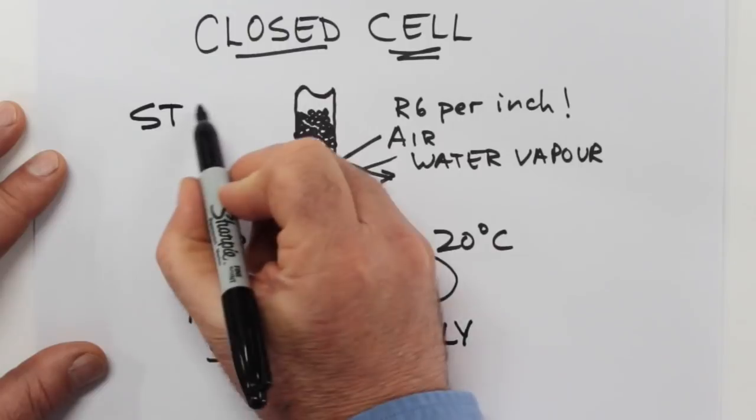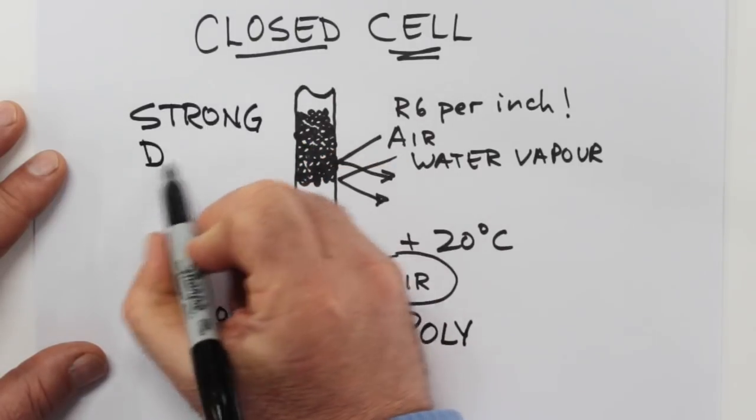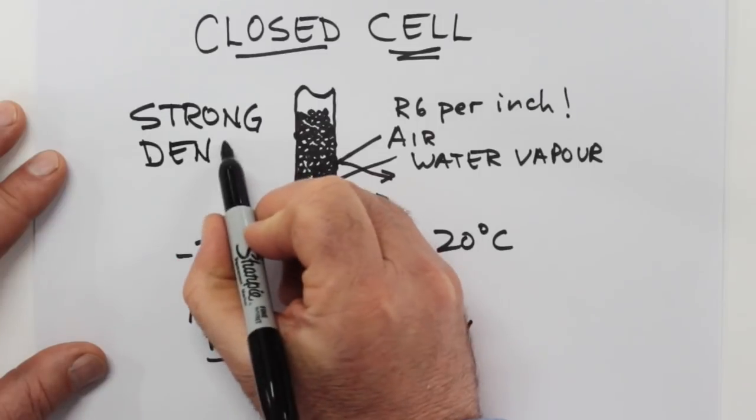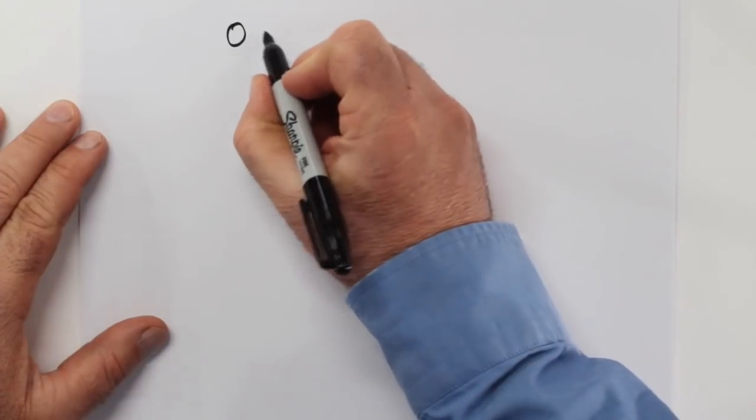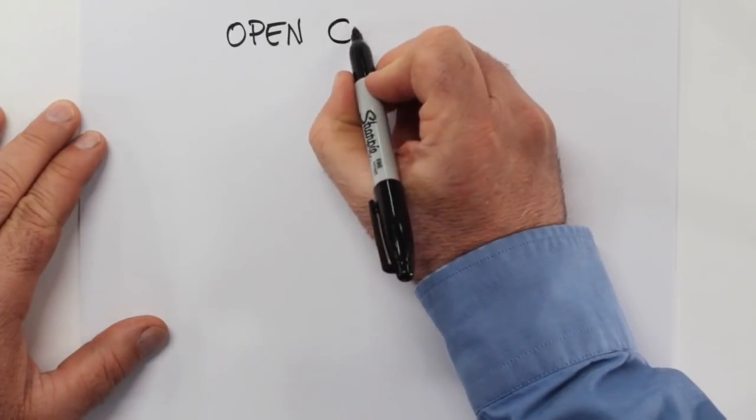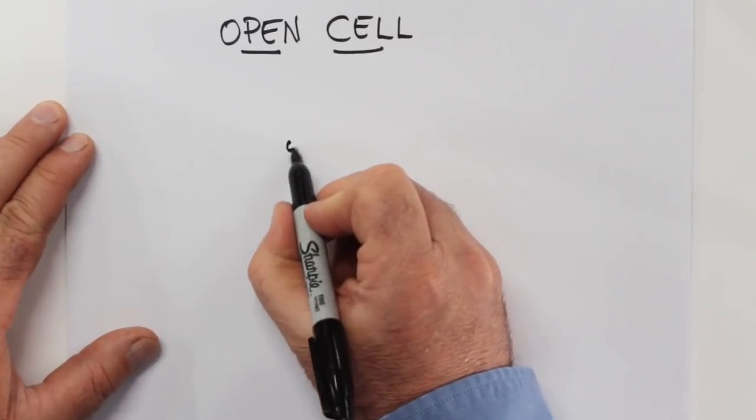Closed cell foam also adds a remarkable amount of strength to a structure because it's so dense and it adheres so well to framing structures. The other type of spray foam is called open cell, precisely because the cells that make it up are more open.